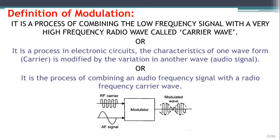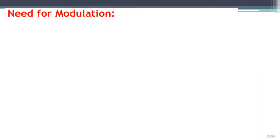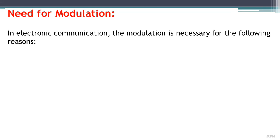The RF carrier signal and the AF signal are both fed to a modulator, and the modulated wave is a combination of these two signals. In electronic communication, modulation is necessary for the following reasons.